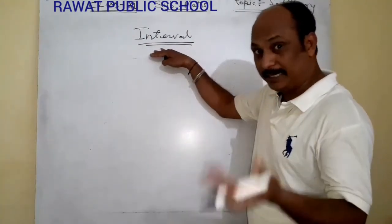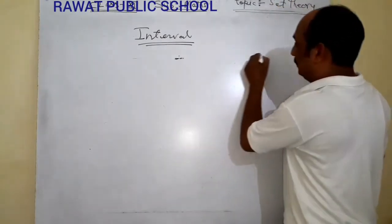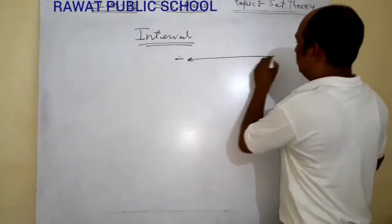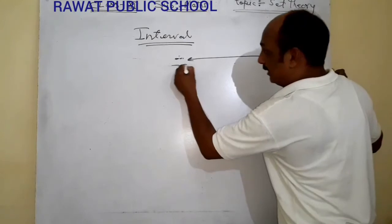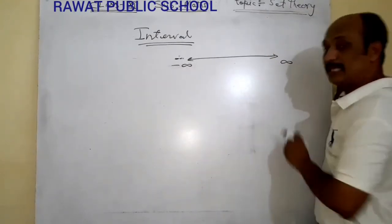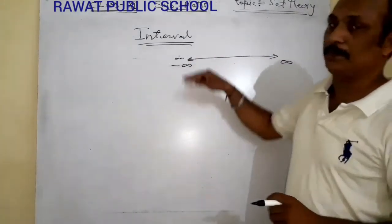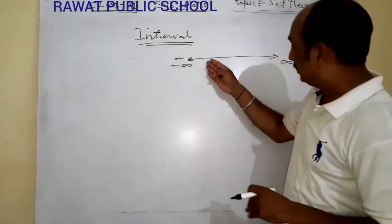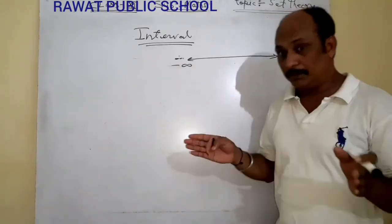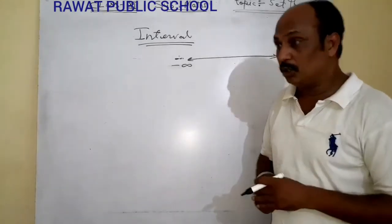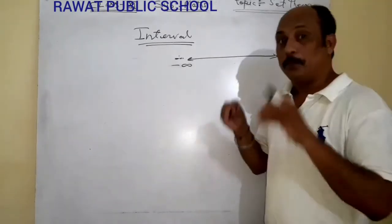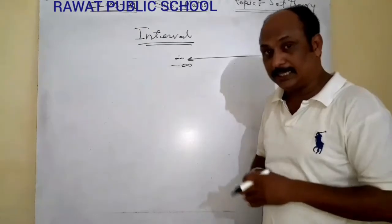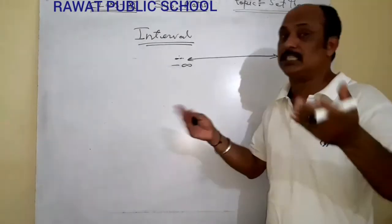Interval means number line. This is minus infinite to plus infinite. This is the real number line. Okay, now this number line, we will mention, point, plot, represent which type we can do.